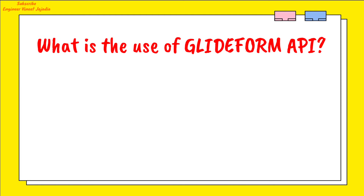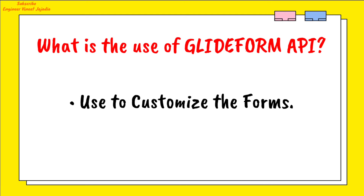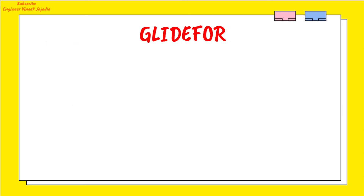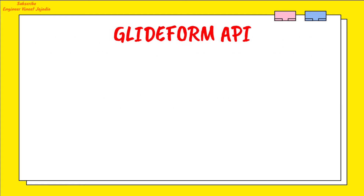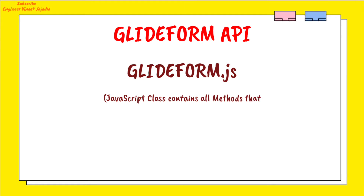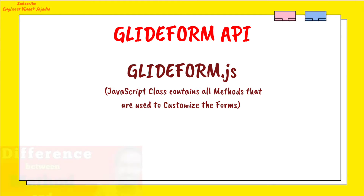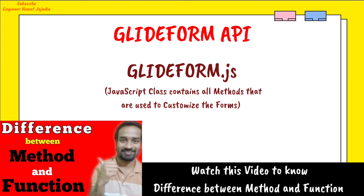What does GlideForm API do? Basically, it is used to customize the forms. We customize our forms in ServiceNow according to the requirements with the help of GlideForm API. In ServiceNow there is a class for it called glide form.js, which is the JavaScript class that contains all the methods used to customize the forms.